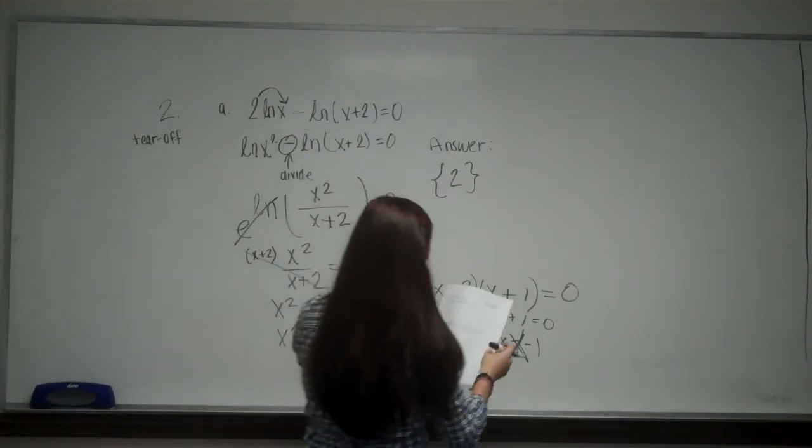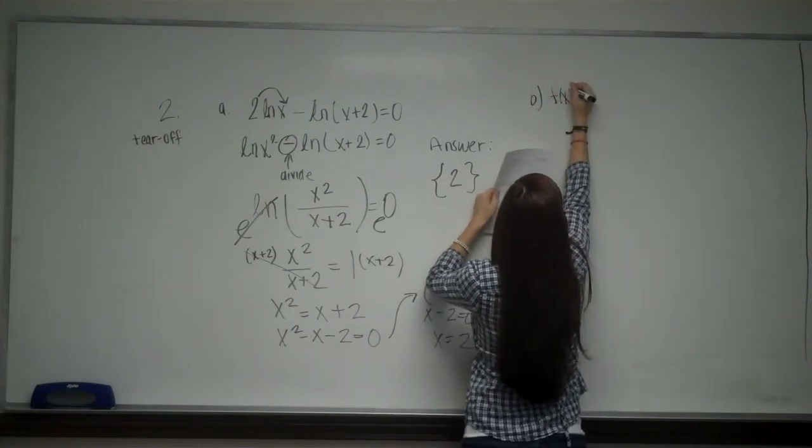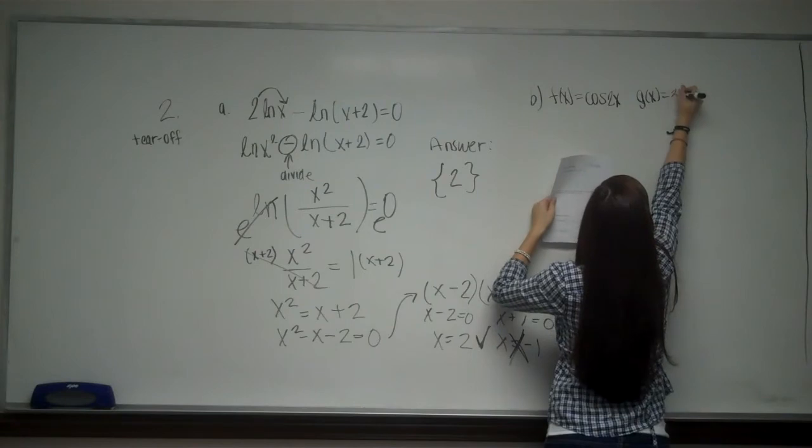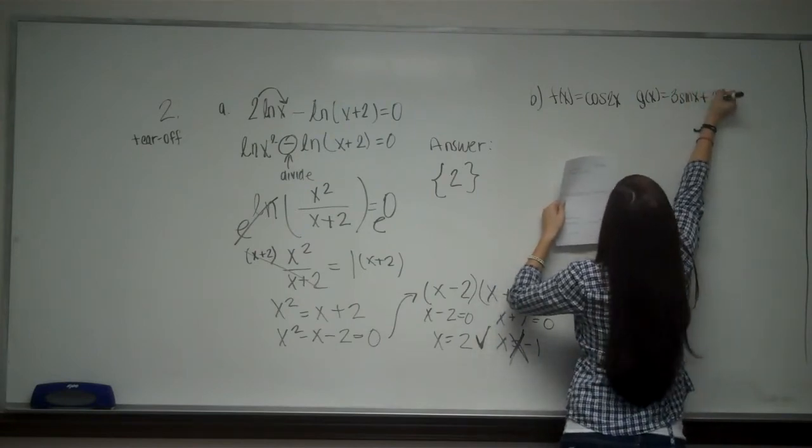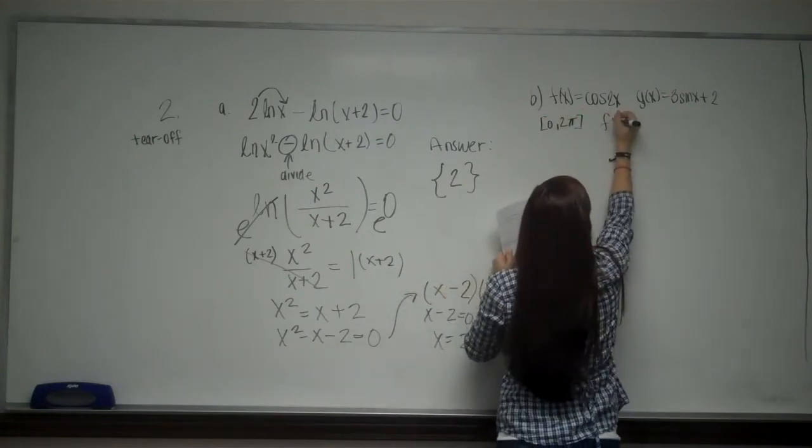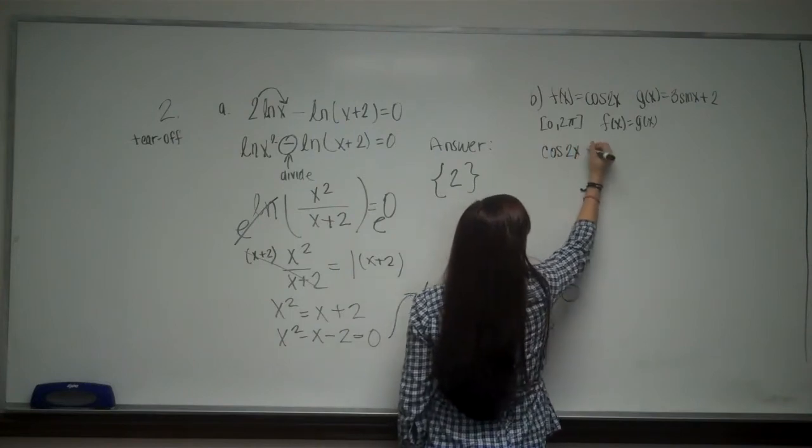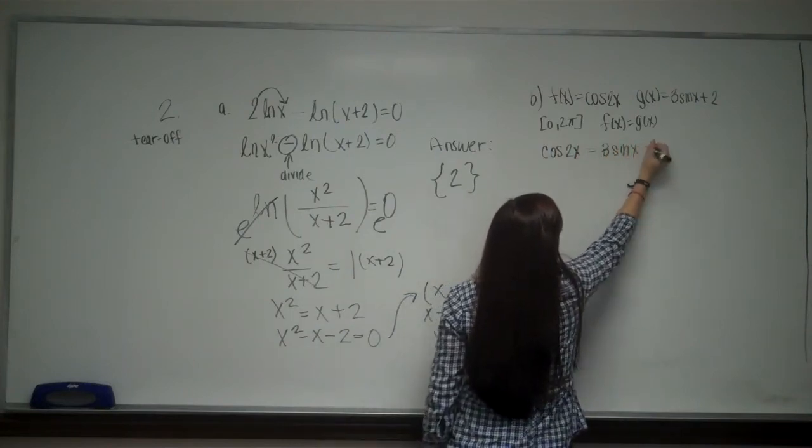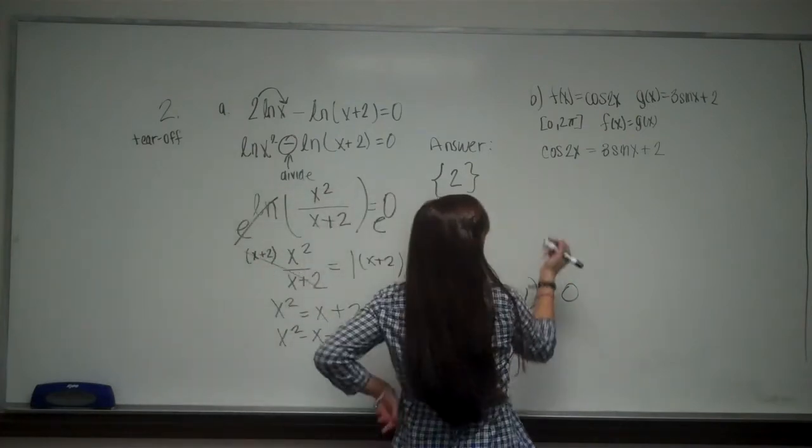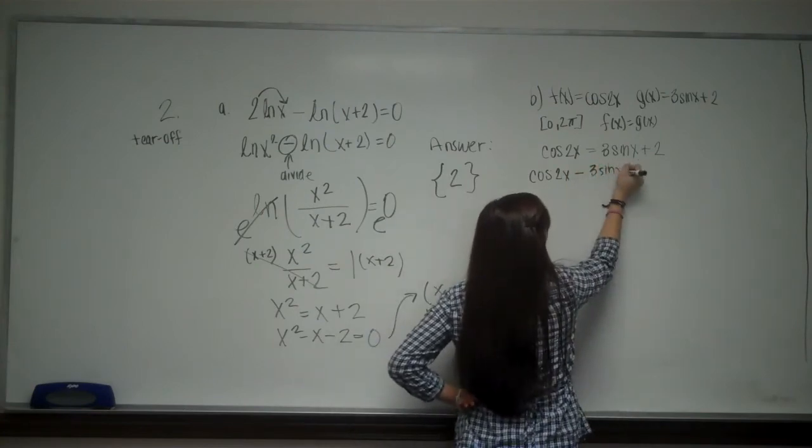And now for part b. They say let f of x equal cosine of 2x and g of x equal 3 sine x plus 2. Now on the interval from 0 to 2 pi, they want to know when f of x equals g of x. So I have cosine of 2x equals 3 sine x plus 2. Now remember I said it earlier that we want to subtract everything to one side. We don't just want to divide. So when I have trig identities, sine x minus 2.